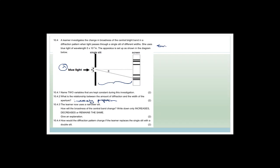In other words, the smaller the slit, the greater the angle of diffraction. The learner now uses a narrower slit — how will the broadness of the central band change? The correct answer is it increases. Because the smaller the slit, the narrower the slit, the greater the diffraction, which means the angle gets bigger. So it's going to reach the position of the dark bands further away from the center. The smaller the slit, the greater the diffraction.